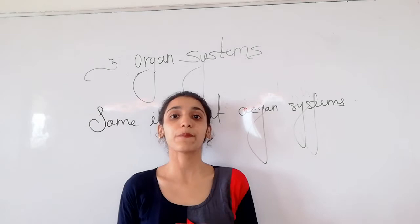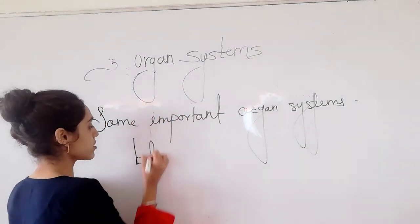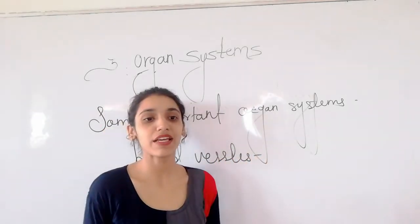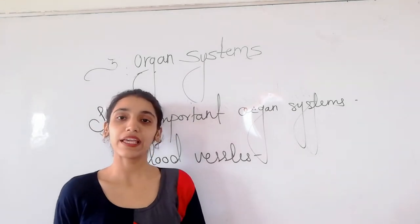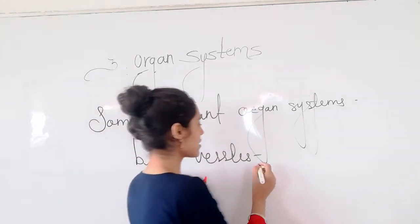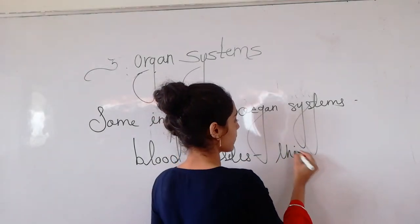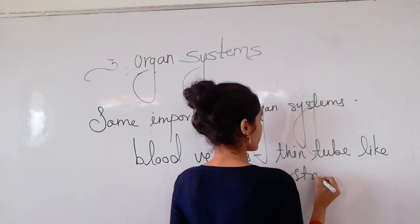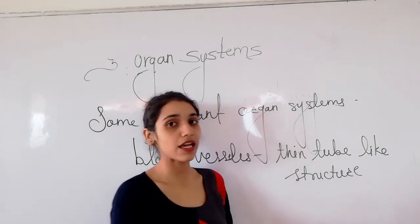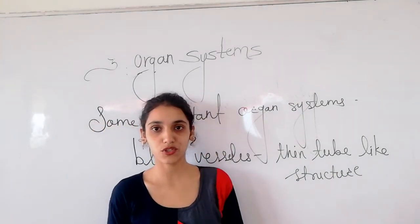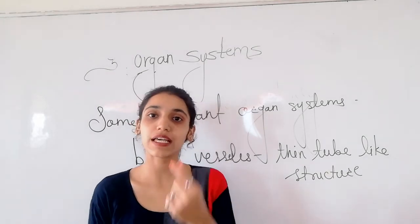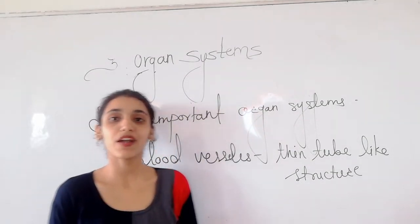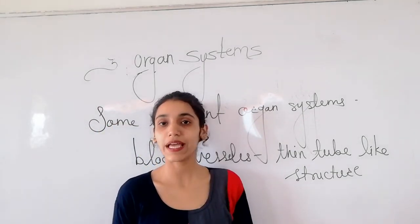Blood passes through the blood vessels. Blood vessels are tube-like structures. Blood flows through these thin tubes, called blood vessels.